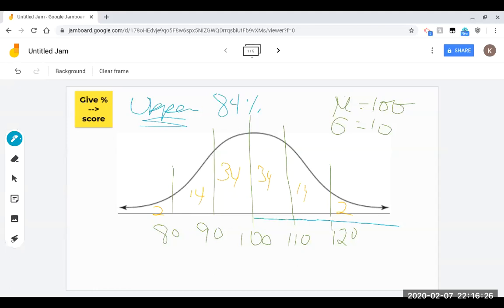So now remember, up to the 100 mark, that's 50. So that's not enough, I need to keep going. So I want to go up until I can get to 84%, and that's going to be magically on this line because 50 plus 34 is 84. So the score associated with the upper 84% is 90.